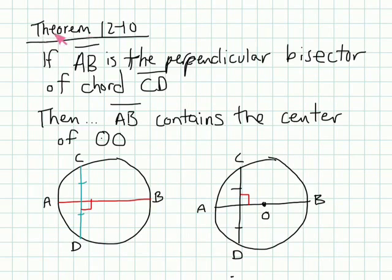Lastly, is theorem 12.10. And this says that if AB is the perpendicular bisector of chord CD, meaning that this is going to bisect this chord into two equal parts, let's call this E on both sides. So if AB is bisecting chord CD here, so the two parts are going to be equal, then AB contains the center O. These are all very much related. Your book has more information, page 774, if you want to explore them more.